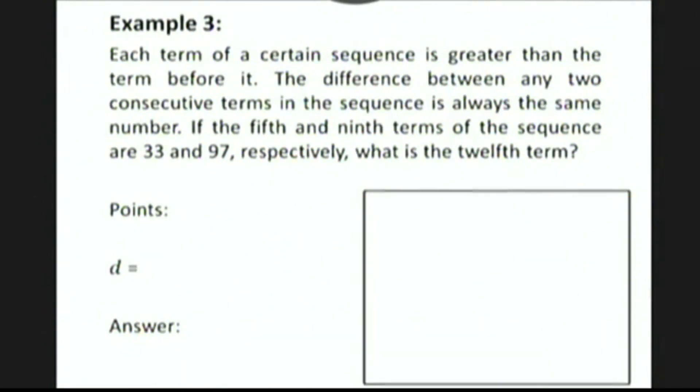Let's try another example. Each term of a certain sequence is greater than the term before it. The difference between any two consecutive terms in the sequence is always the same number. If the fifth and ninth terms of the sequence are 33 and 97 respectively, what is the 12th term?